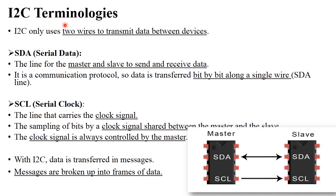The next point is I2C terminology. To perform communication between master and slave, I2C protocol uses different terminologies. In the diagram, both master and slave have components SDA and SCL. SDA stands for Serial Data, which sends data from master to slave and from slave to master — that is why the wire is bidirectional.